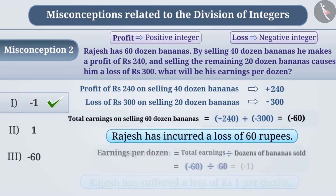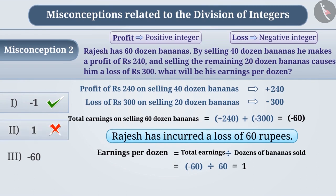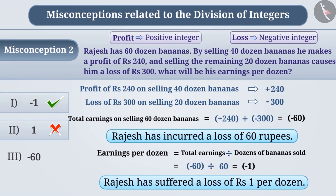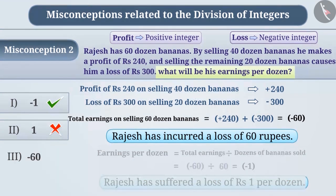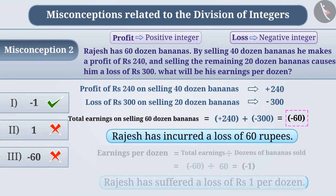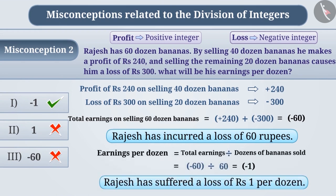Hence, the correct answer is option 1. Some children ignore the minus sign while dividing, which gives them the wrong answer of 1. Similarly, some children ignore what is being asked in the question — here, how much Rajesh earns per dozen. While solving, they only calculate the total earnings, that is Rs. 240 plus minus 300 equals minus 60, and forget to divide by the number of dozens of bananas, answering minus 60, which is also the wrong answer. To find the correct answer, it is necessary to divide the total earnings by the number of dozens of bananas, giving the correct answer of minus 1.